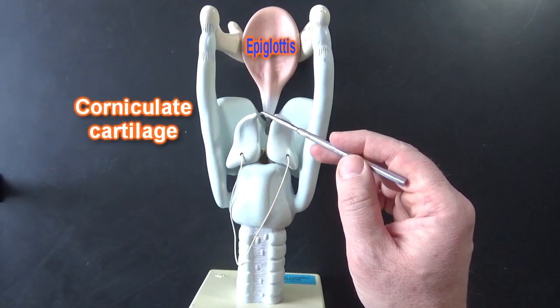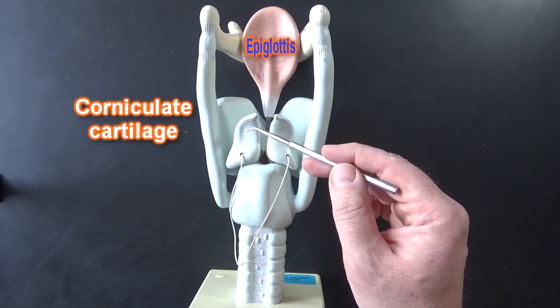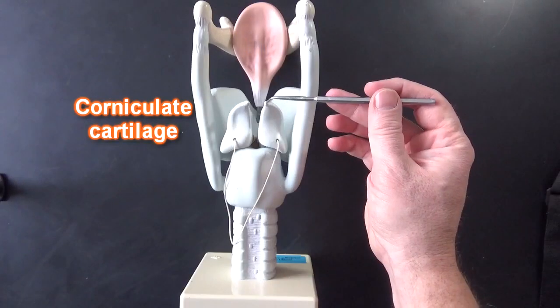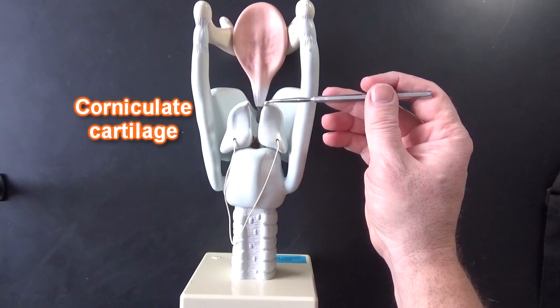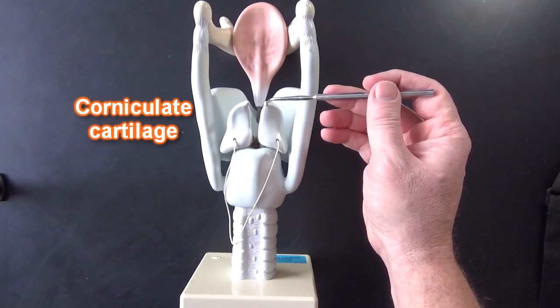These would be corniculate cartilages up on top of the arytenoid cartilages. These little corniculate cartilages to me look like little pieces of corn.